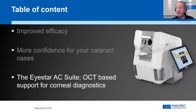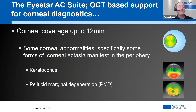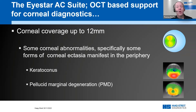The next section is the AC Suite — the OCT-based corneal diagnosis support. With the AC Suite you get extended corneal topography. The cataract suite provides corneal coverage of 7.5 mm, which is suitable for most applications, but in some cases you need more. The AC Suite extends coverage to 12 mm, covering the entire cornea — beneficial for detecting anomalies like keratoconus or pellucid marginal degeneration that occur more peripherally. This extended coverage applies to corneal front, corneal back, and pachymetry.